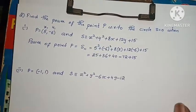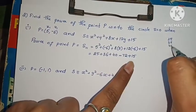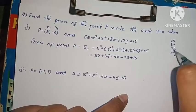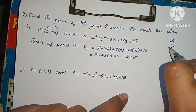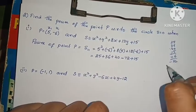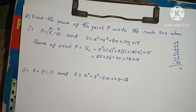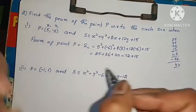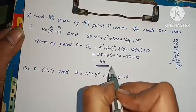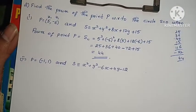Calculating: 25 plus 36 is 61, plus 40 is 101, minus 72 is 29, plus 15 gives 44. So power of point P equals S11 equals 44. This type of problem appears in previous question papers for 2 marks and is quite simple.